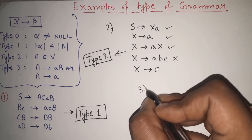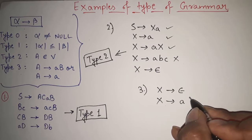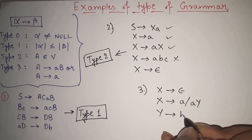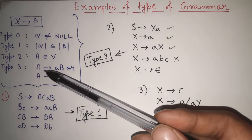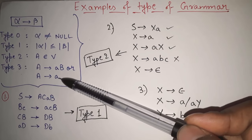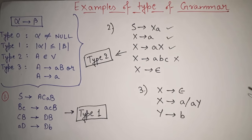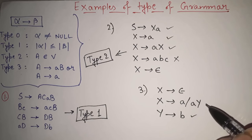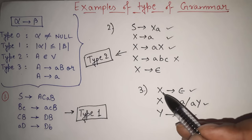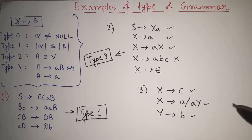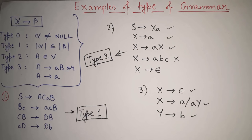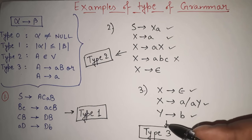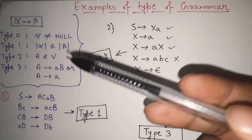Let's see another example. X gives null; X gives A or AY; Y gives B. We have to check which type of grammar this is. Start with type 3: all LHS must be variable — yes. RHS must contain only terminal or the combination of terminal and variable. This is only terminal — yes. Terminal and variable — yes. X gives null is also valid unless X is present in any other RHS. So all productions satisfy the type 3 conditions. This grammar is type 3 — regular grammar. And as it is type 3, it is automatically type 2, type 1, and type 0 also.